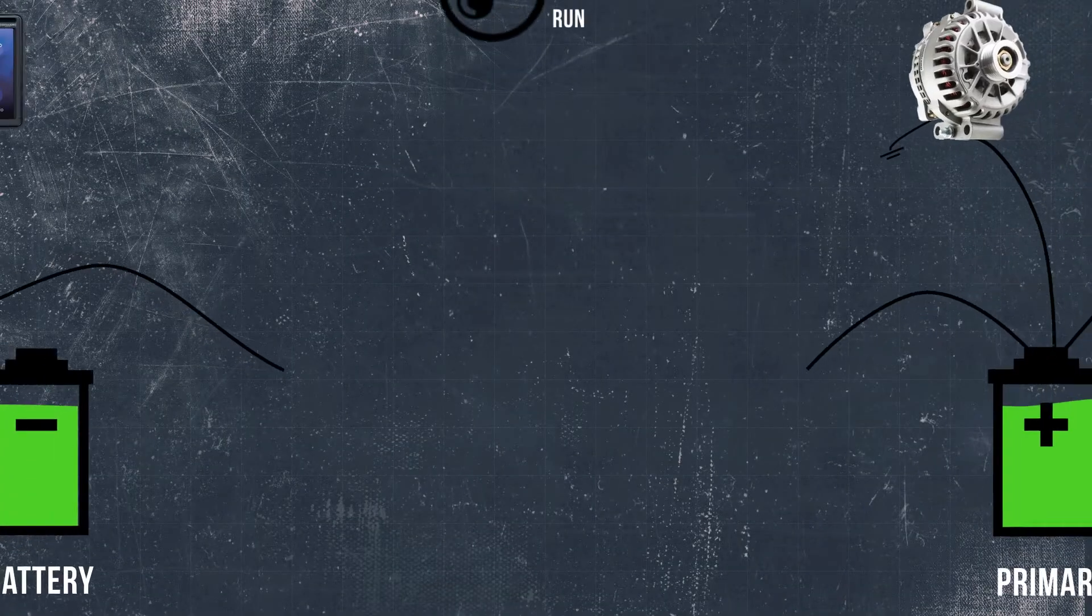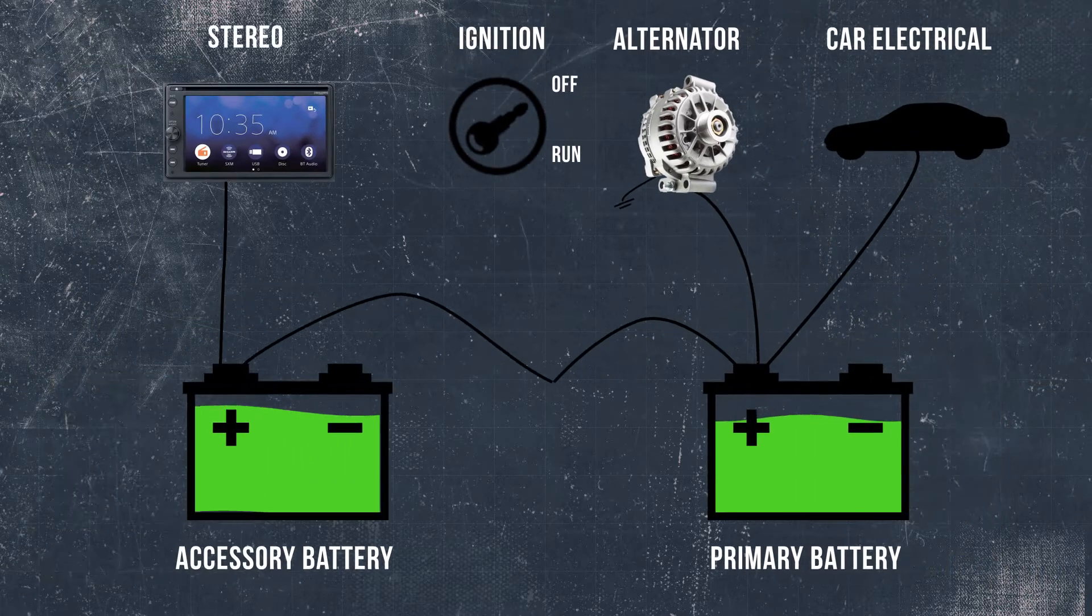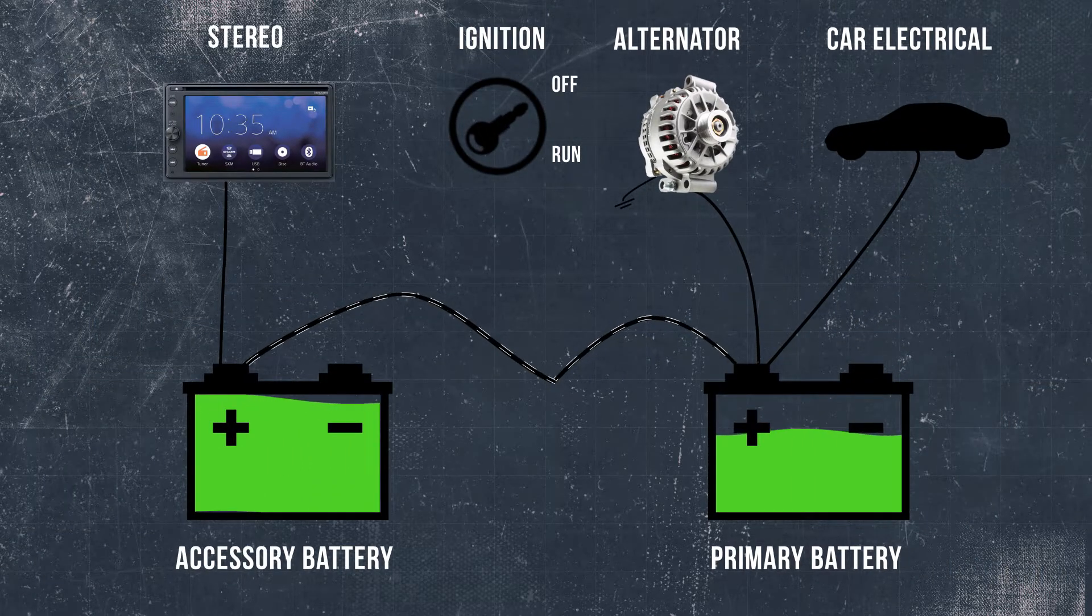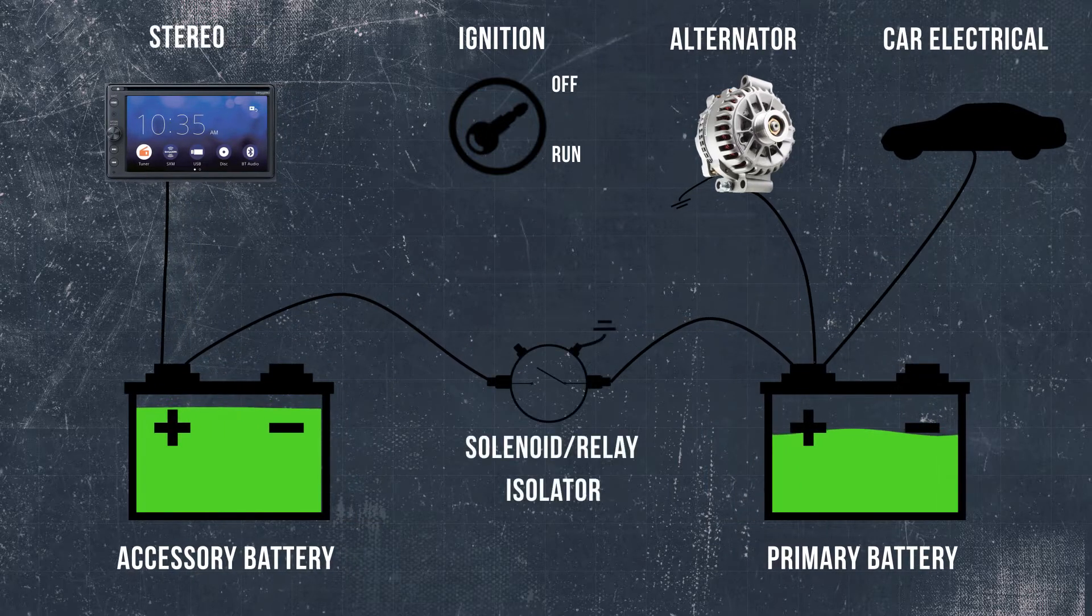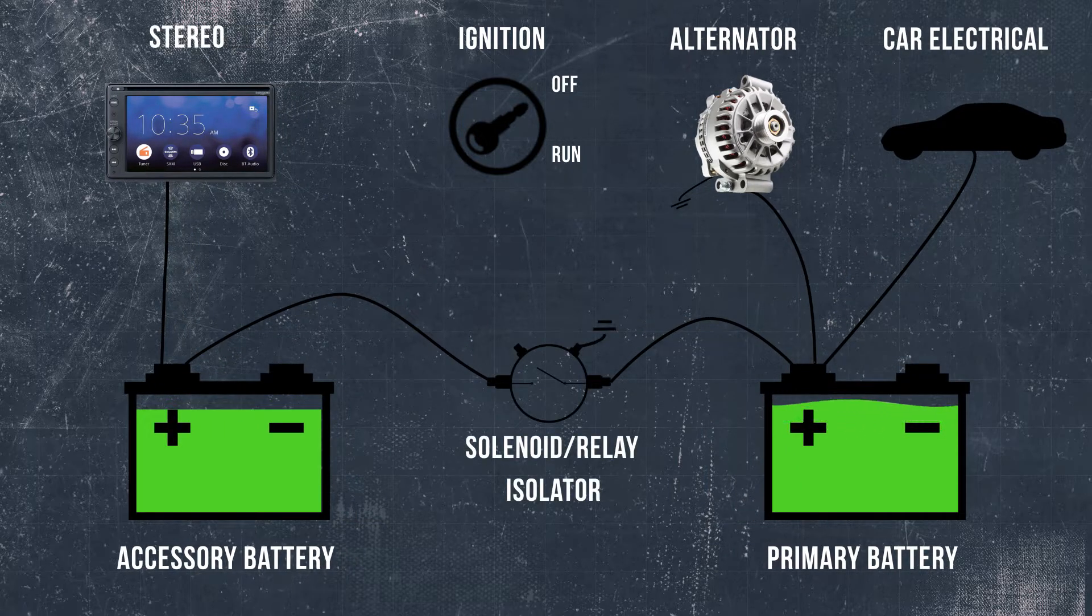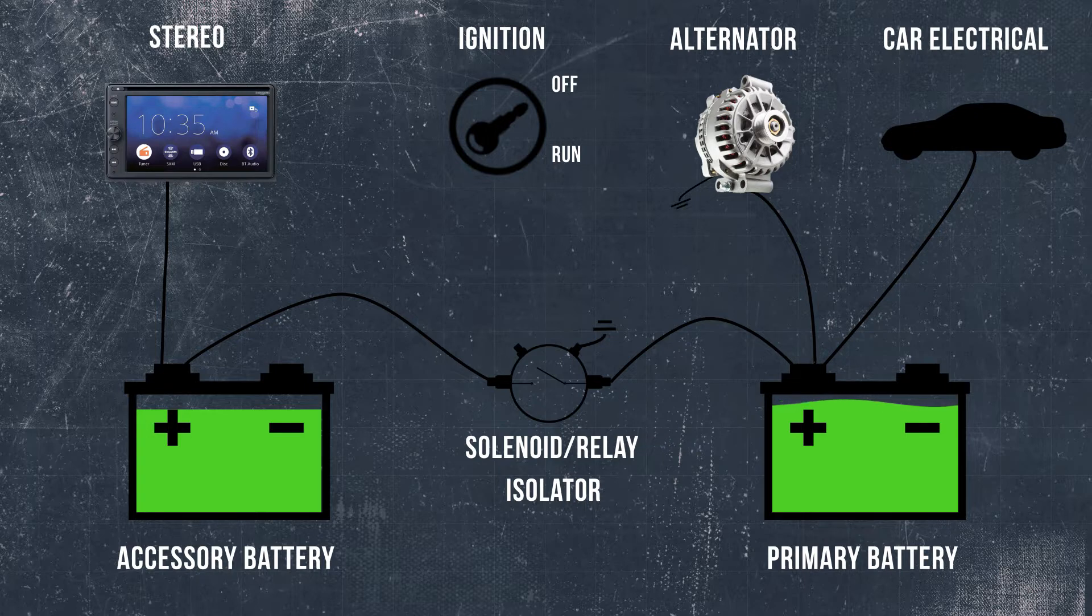When two vehicle batteries are wired in parallel, they have a tendency to charge and drain one another. Installing a relay that disconnects the batteries when the engine is off prevents excessive wear and lengthens the life of the batteries.